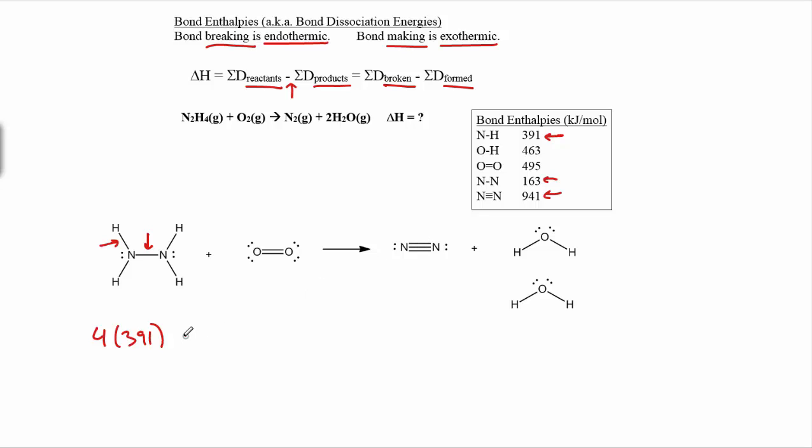We're going to treat this as breaking this one and then making the triple bond. That nitrogen-nitrogen single bond will add in 163, and then finally, we've also got to break this oxygen-oxygen single bond as well. That's another 495. This is the sum of all the bonds in the reactants.